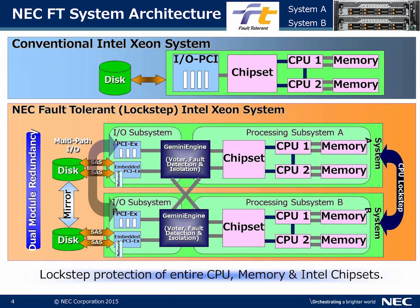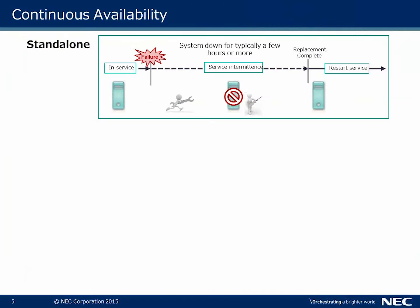What I'm showing here is the actual architecture. At the top is your conventional Intel Xeon system — a single server with disk, IO/PCI chipset, multiple CPUs, and memory. The NEC fault tolerance server, through lockstep, has two of everything: multiple CPUs, multiple memory, multiple paths. You really have two systems acting as one. The intellectual property here is the Gemini engine, which gives us that high availability — lockstep protection of the entire CPU, memory, and Intel chipsets.